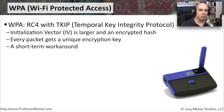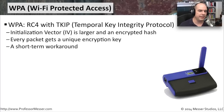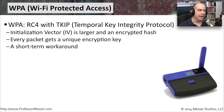When WEP proved to be an inadequate encryption method, the replacement developed was WPA — Wi-Fi Protected Access. This still used RC4, the same cipher used with WEP, but it included a new TKIP, a Temporal Key Integrity Protocol mechanism, and sent the initialization vector across the network as an encrypted hash. Every packet gets a unique encryption key, which was not the case with WEP.